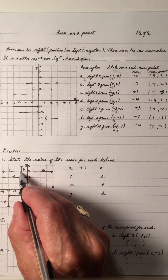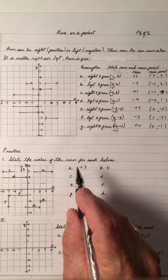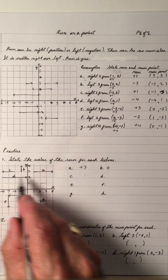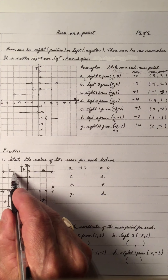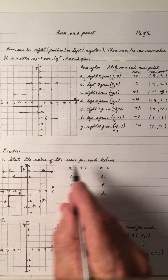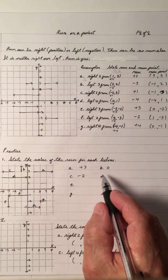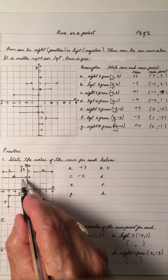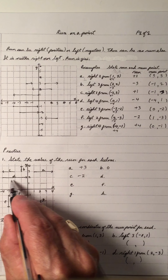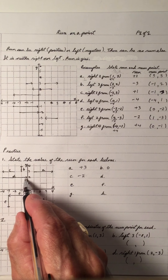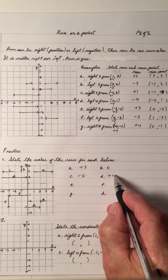B goes up, so that's not a run. The run is zero. C is this line here — one, two, going left. So there's a minus two. D: follow the arrow — one, two, three, four, going to the right. So it's a plus four.